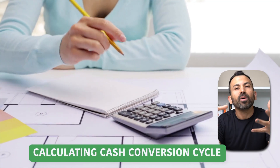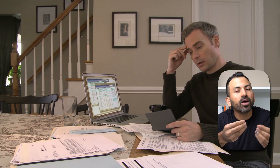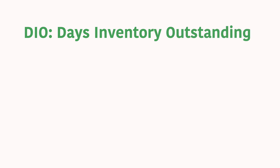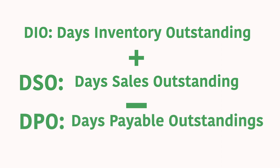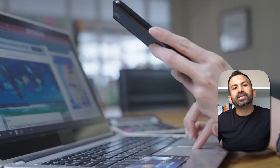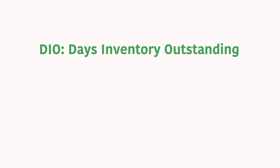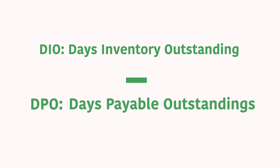Calculating the cash conversion cycle: at its core, it is measured in number of days. The formula is DIO — days inventory outstanding, meaning the number of days your inventory sits in your warehouse — plus DSO, days sales outstanding, the number of days it takes to collect cash from customers — minus DPO, days payable outstanding, the number of days it takes to pay your suppliers. For many e-commerce businesses, cash collection isn't an issue, so a modified version uses just two components: DIO minus DPO.